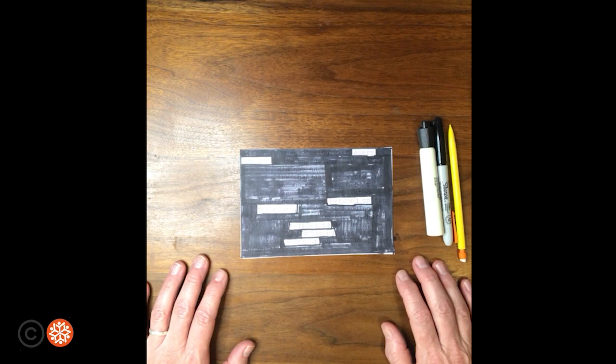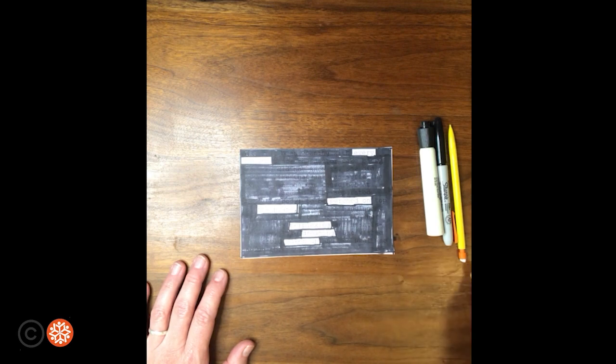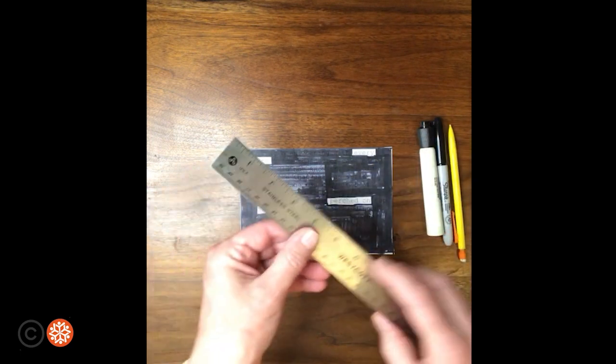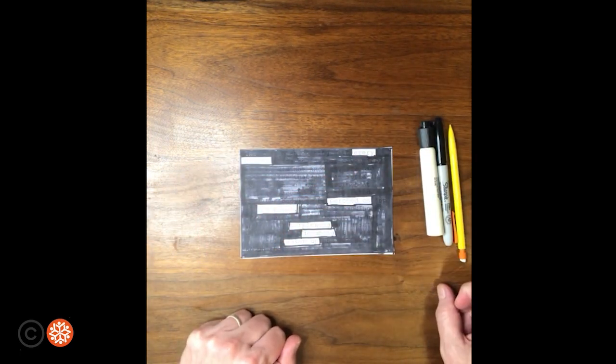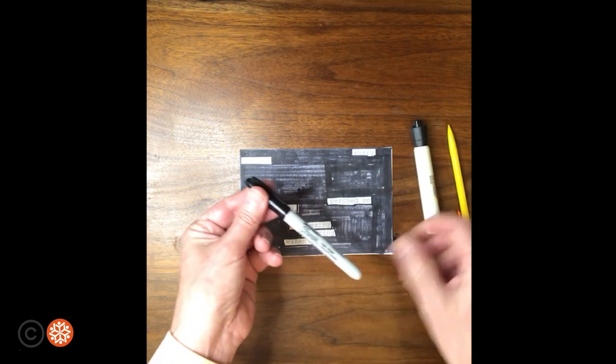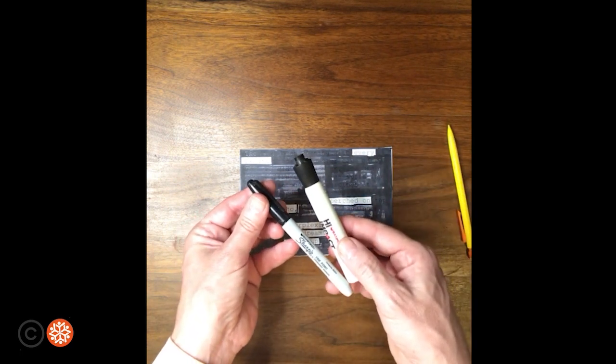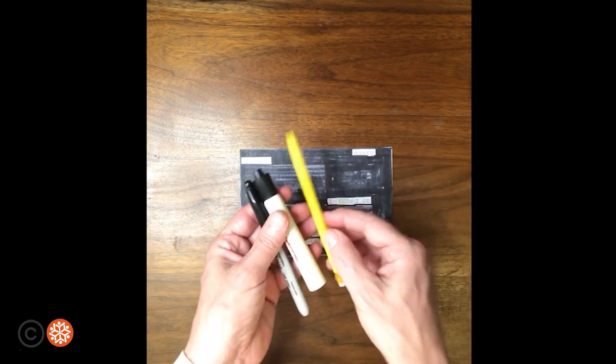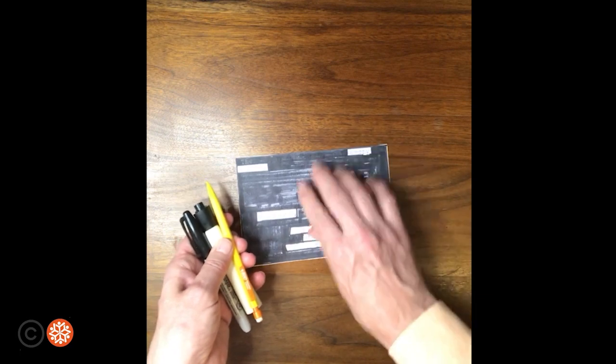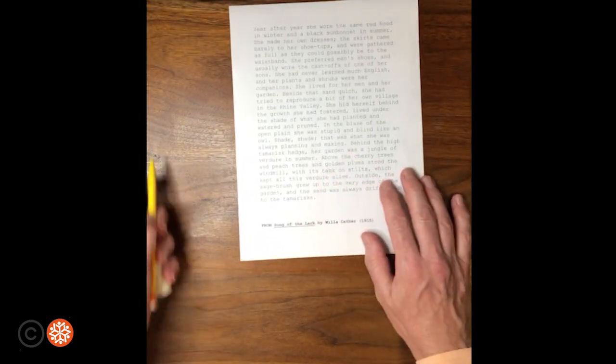In this short erasure poem, I used a ruler to mark out the words that I wanted people to be able to read with nice straight lines. You can use a sharpie, you can use a thicker black marker, and I like to begin with a pencil to make my initial choices just in case I want to change my mind.